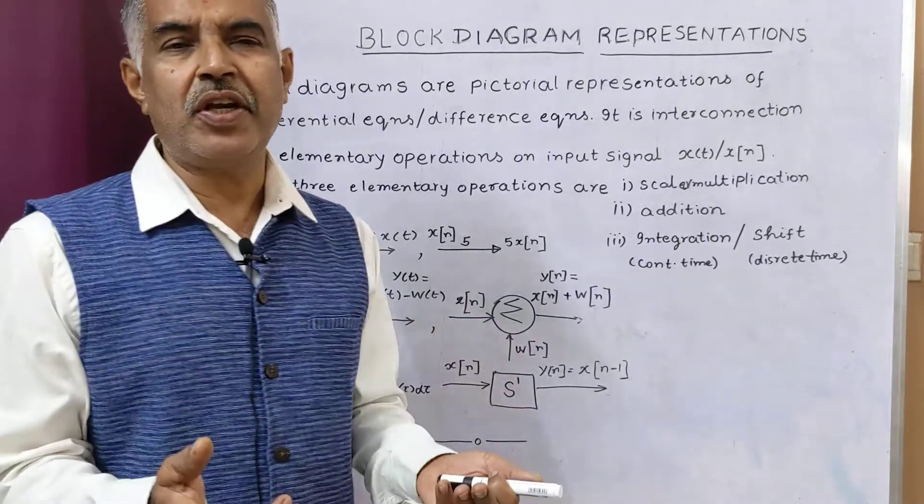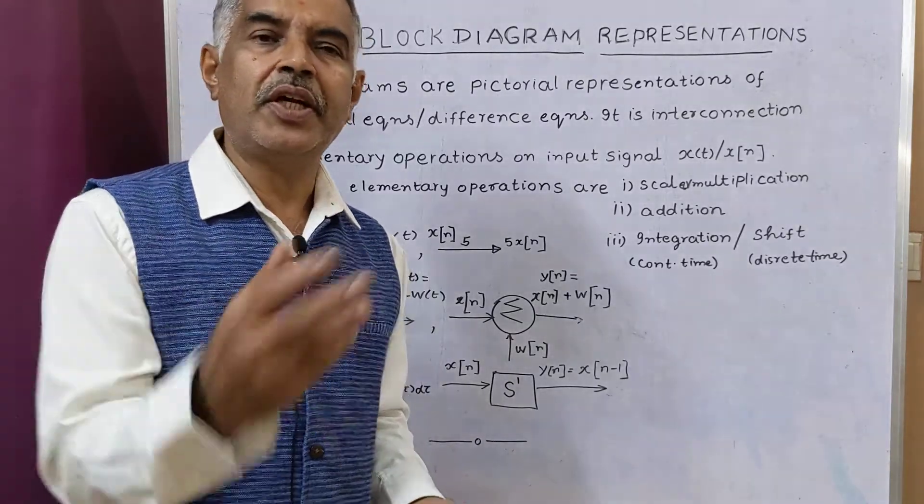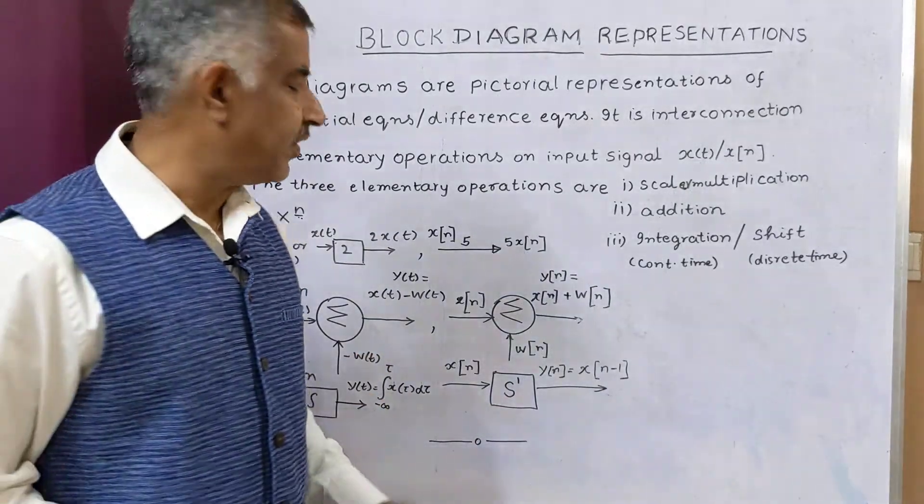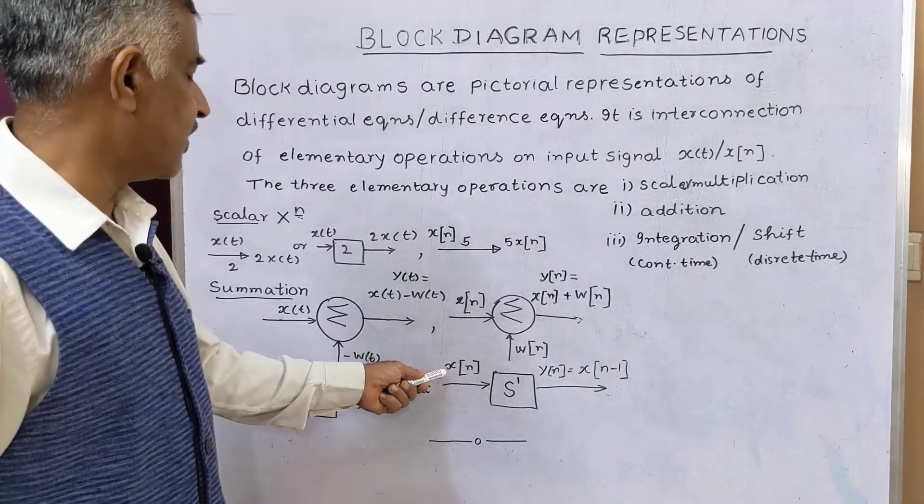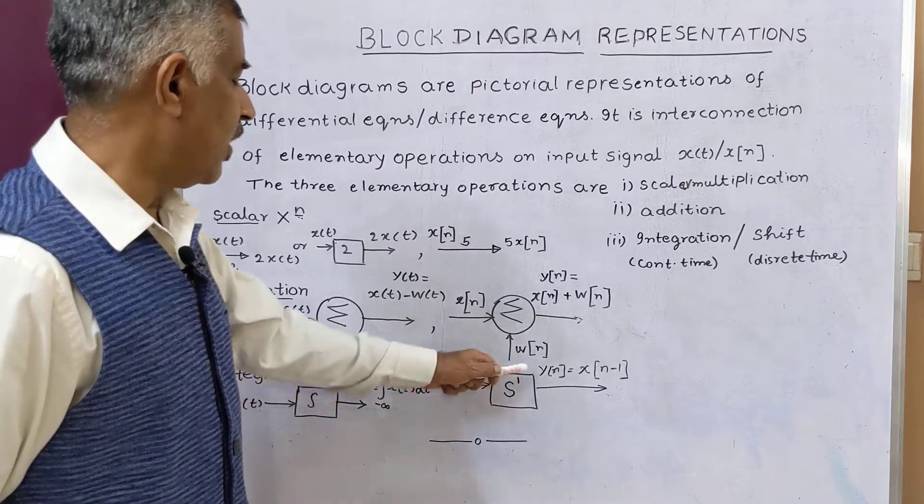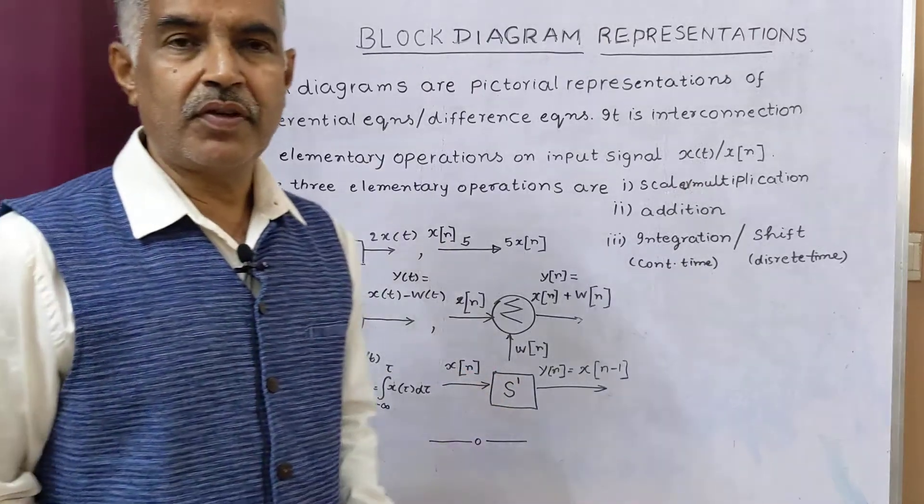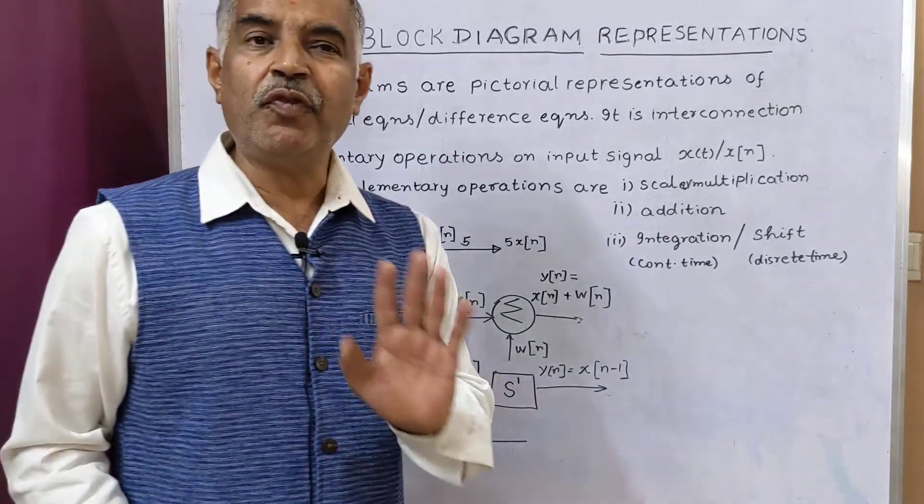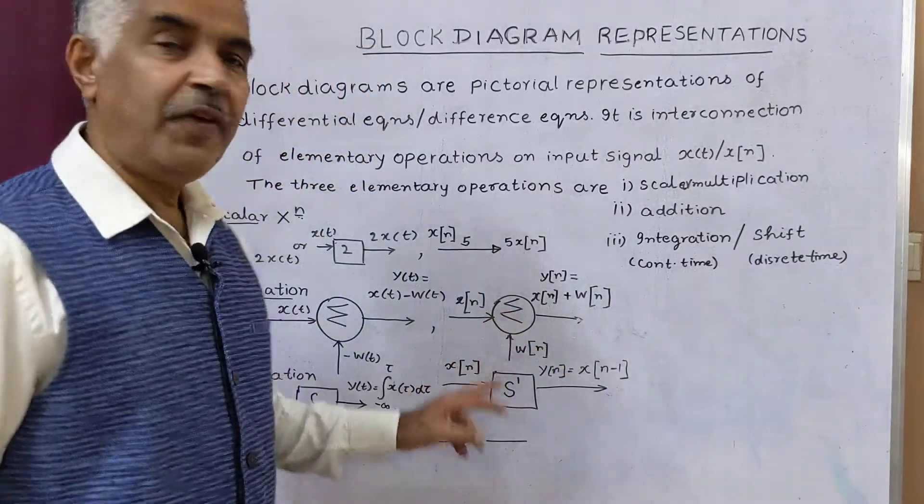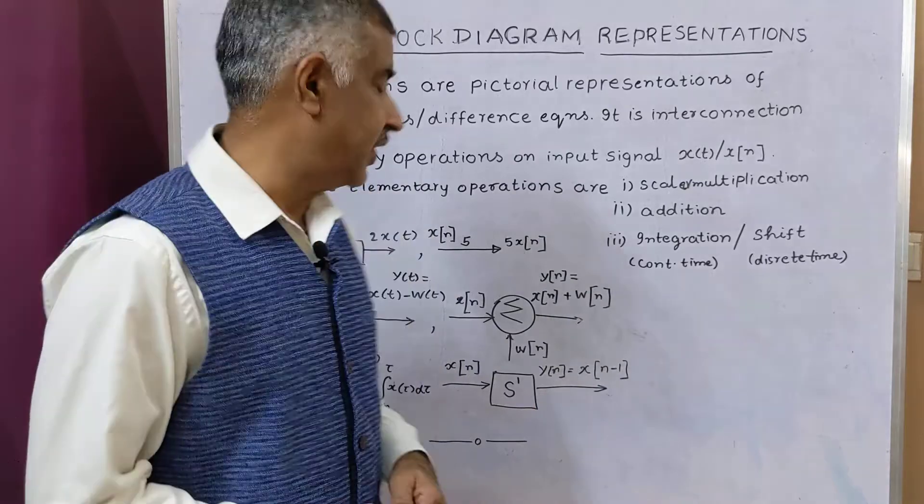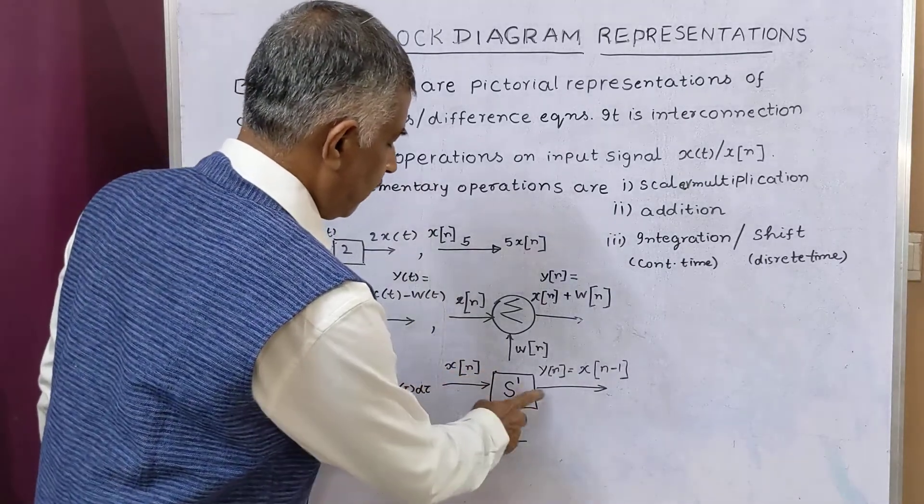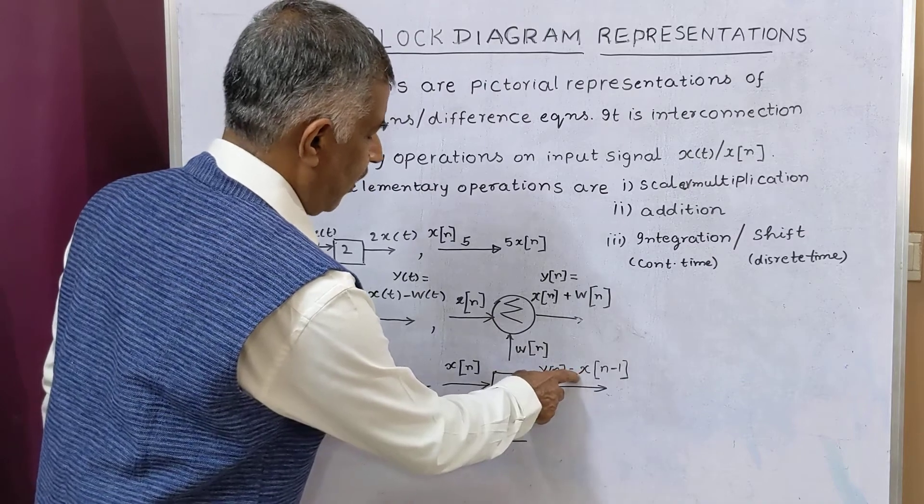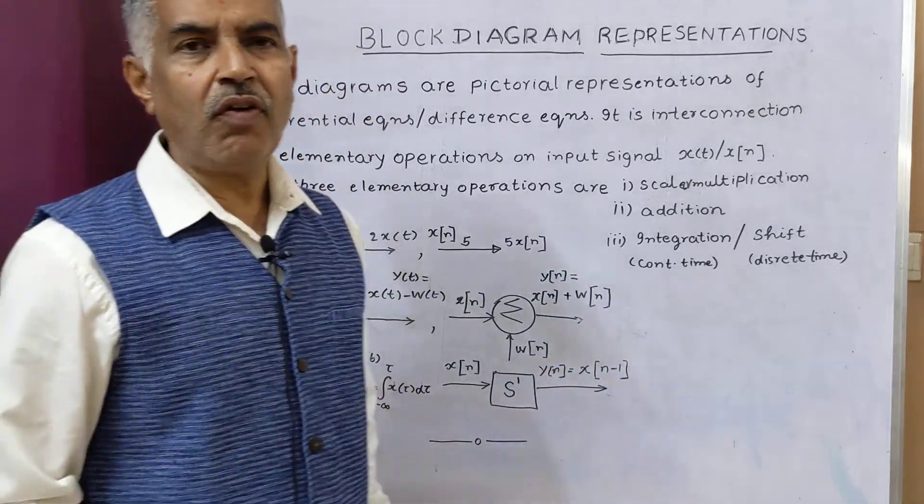That means if you are given differential equation, you have to convert that into an integral equation. Next, in the case of discrete systems, here x[n] is the input signal to a block S to the power of one. So if one is shown above S, that means a shift of one unit. If it is two, it is a shift of two units. So x[n], when it is given to S to the power of one block, the output is x[n-1], a shift of one unit.